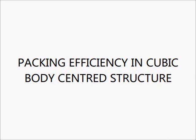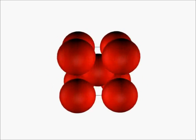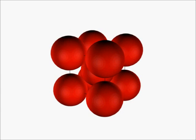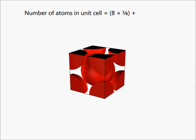Packing Efficiency in Cubic Body-Centered Structure: The unit cell has 8 corner atoms and an atom at the center of the cube. Each corner atom contributes 1/8th of its volume to the unit cell, and the center atom fully contributes its volume. So the number of atoms in the unit cell is equal to 8 × (1/8) + 1, which equals 2 atoms.